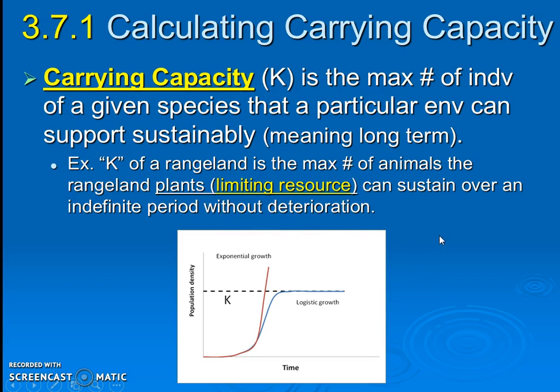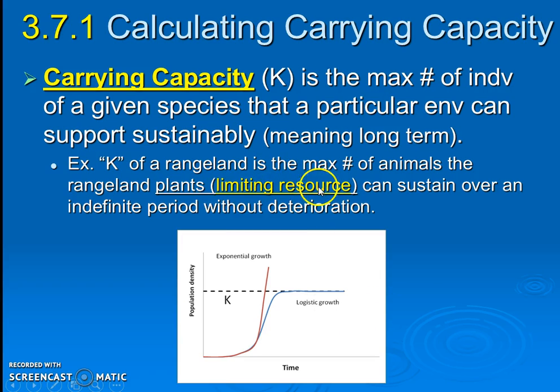Now start picturing this for humans. There are a lot of resources that are limiting for us — common goods we've been learning about — things like soil, food, water, and energy. We're worried about all of those as limiting resources and whether we're using them sustainably. This makes us wonder: what is the maximum number of humans the planet can hold? What is our carrying capacity? We're over 7 billion now — are we going to 10 billion? What's the limit? That's going to be related to these limiting resources, and it's not an easy question to answer.